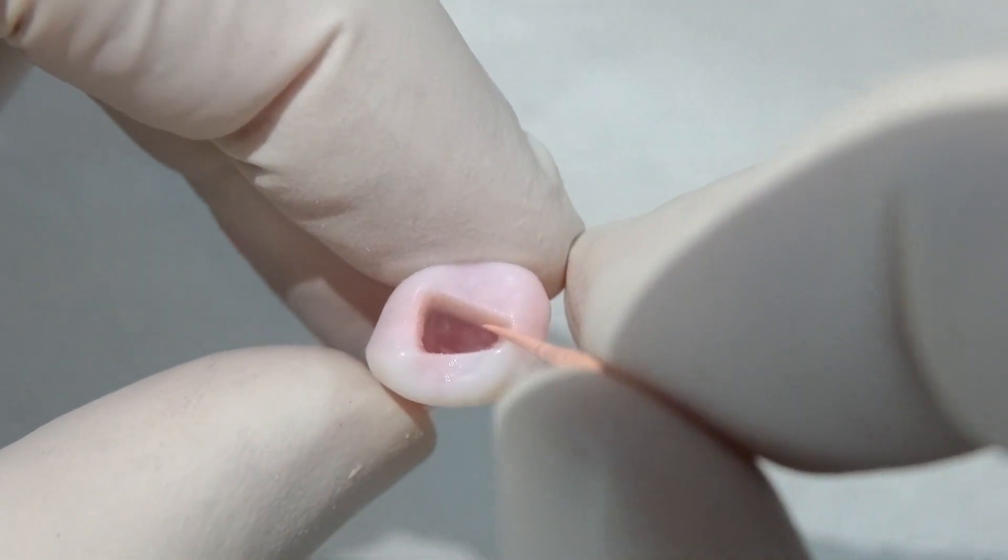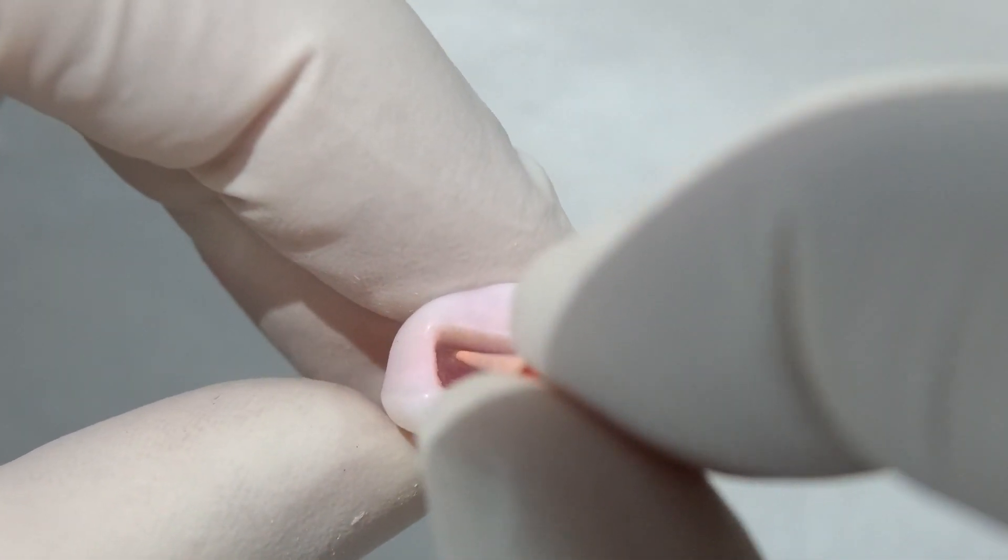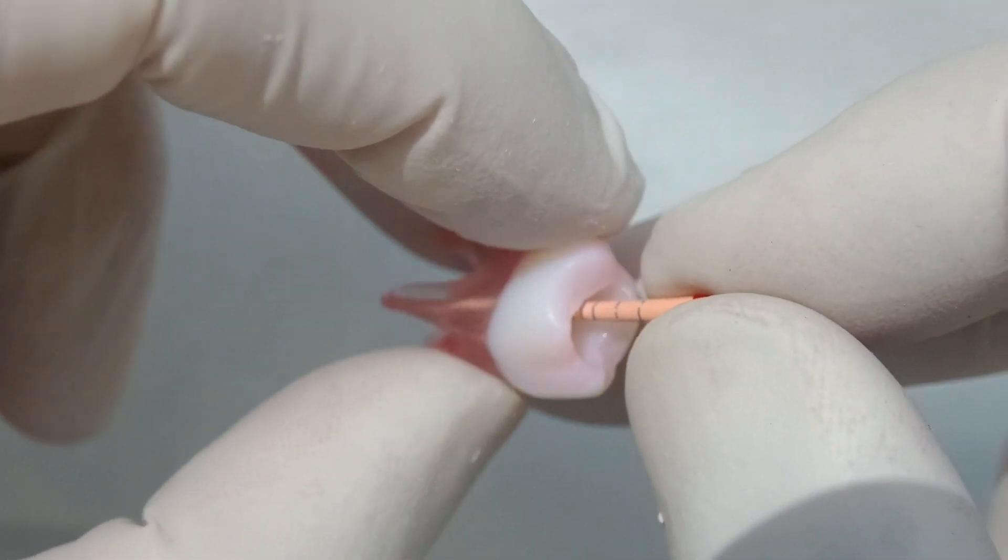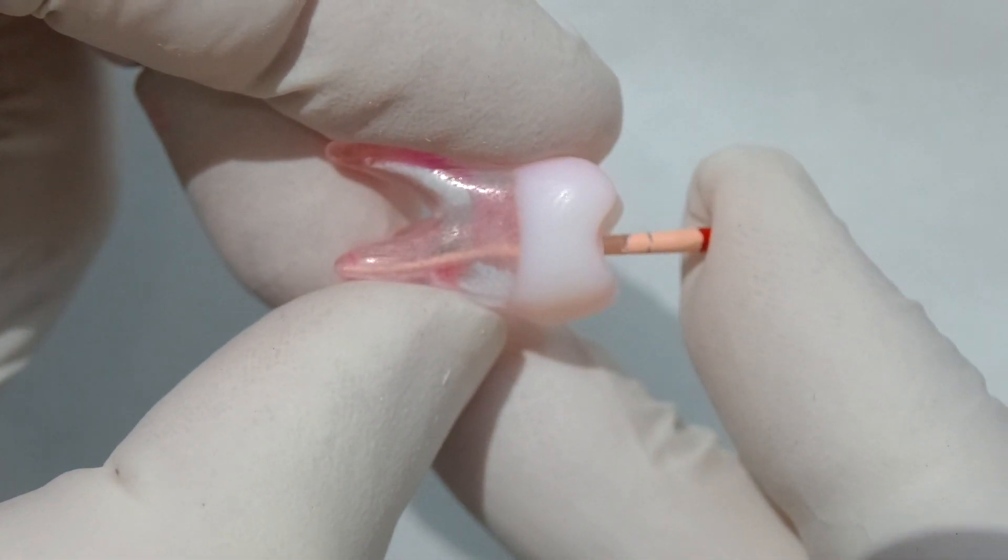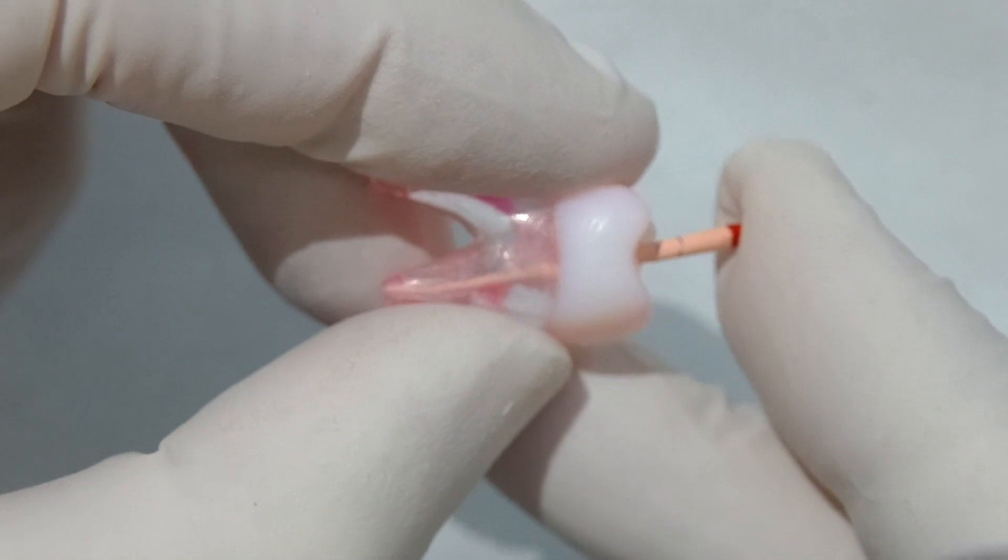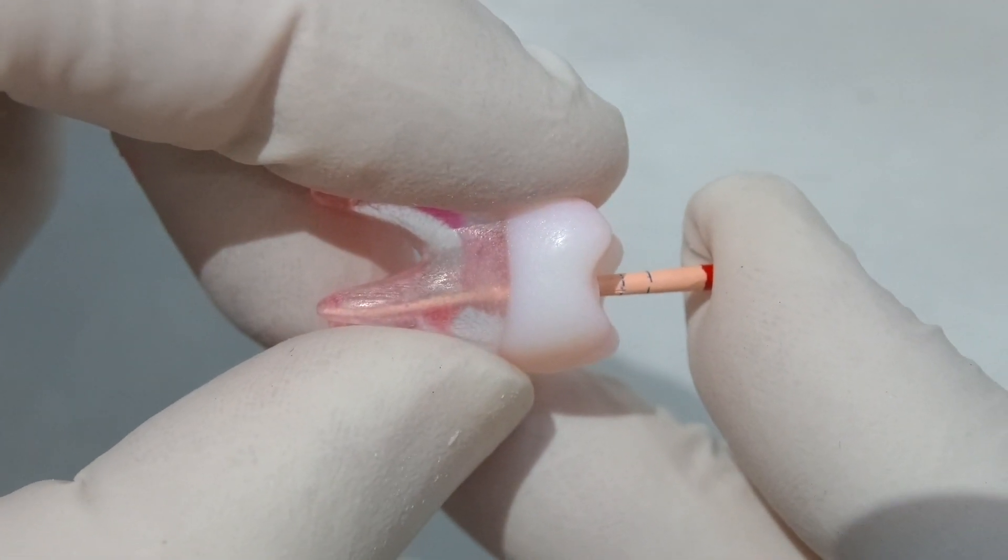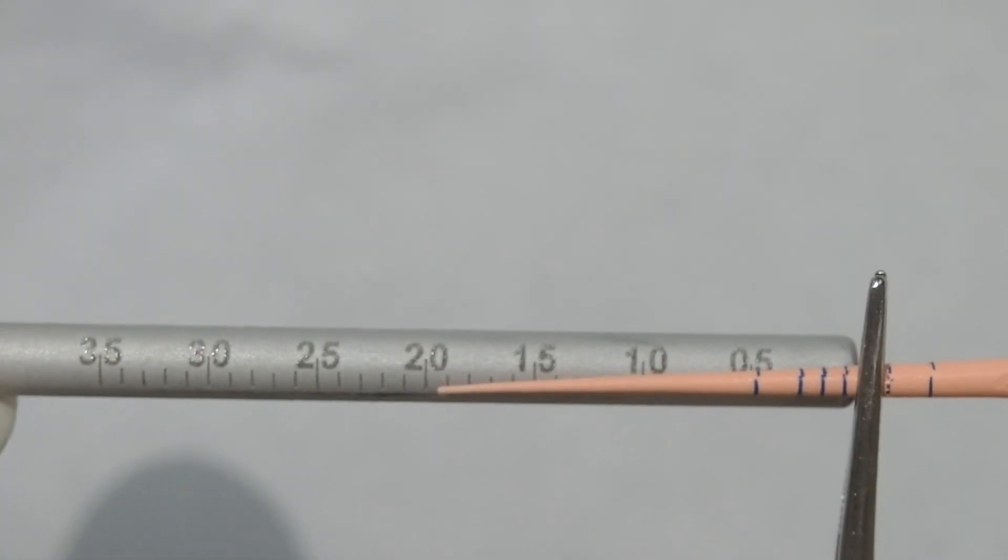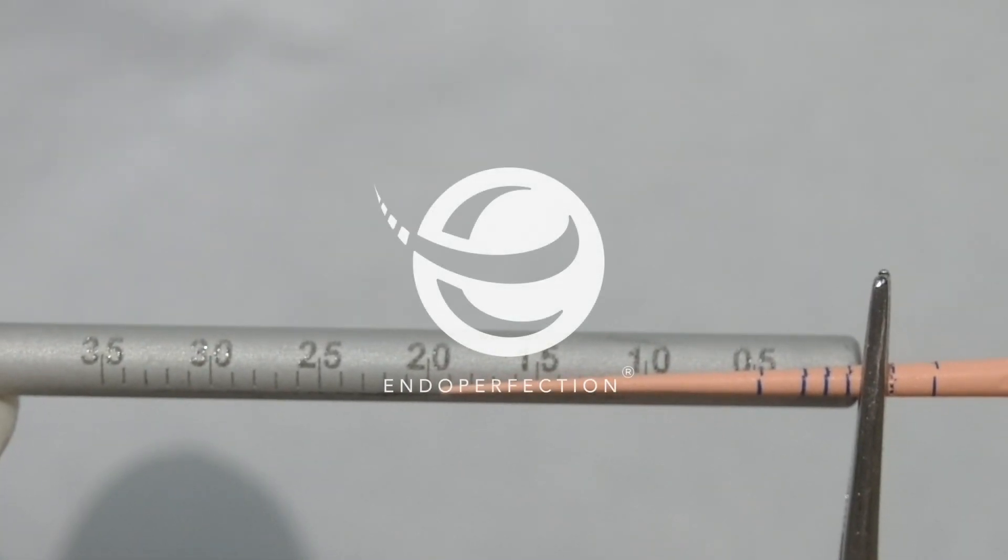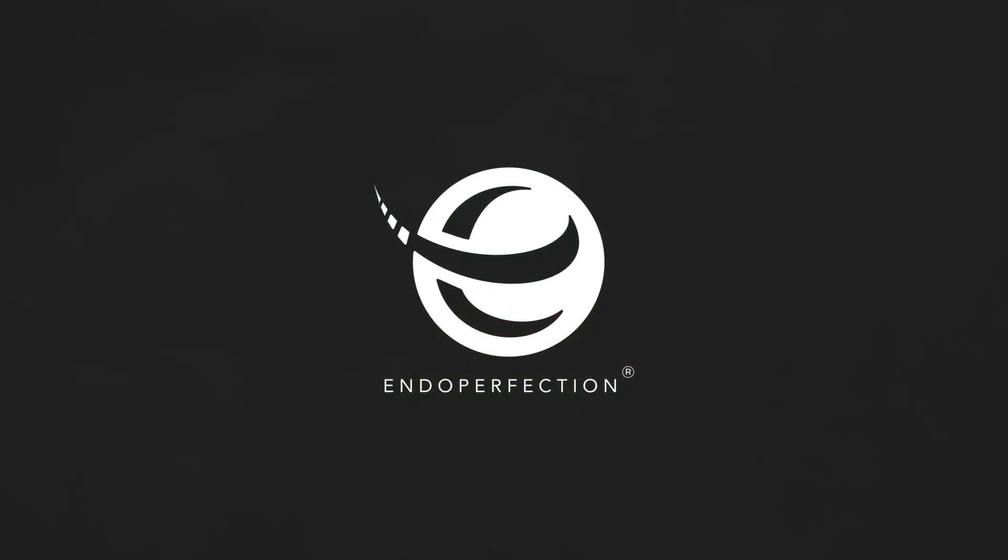And then we've got our matching gutta-percha. These GP cones match beautifully to our files. We take the GP in. And as we would with the patient, we'd seat it down with our finger. Make sure it's seated all the way down. Once we're happy that's seated down, we then slide the tweezers down against the reference point. Measure that and you can see that's spot on.